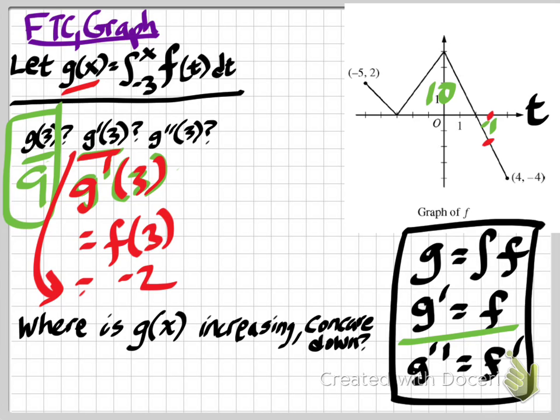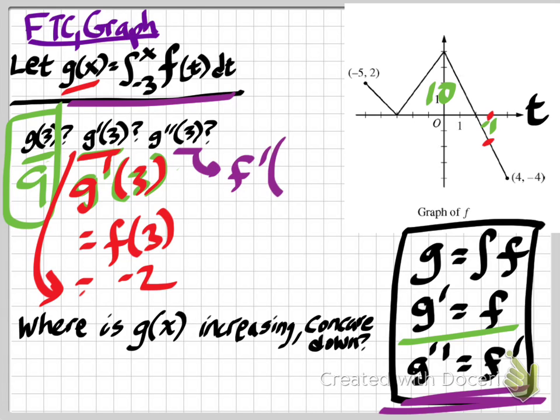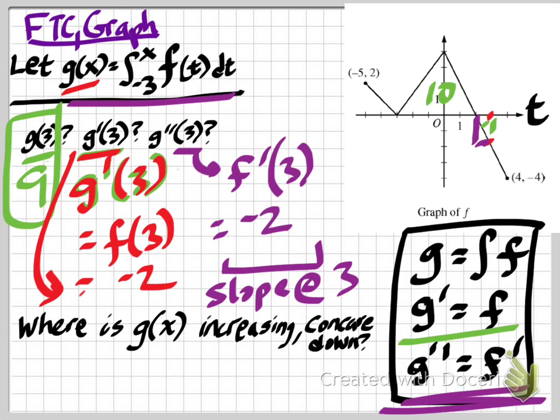g''(3) is our next question here. g''(3), well, once again, if g is the integral of f and g' is f, then as we saw for our sort of chart down here, g'' is just f'. So, this is another way of asking the question, what is f'(3)? Now, we don't have a graph of f', but a derivative, which is what this prime here is telling us, the derivative is the slope of a function, right? The slope of the tangent line. And so, this is basically asking, what is the slope at 3? Slope at 3 of the only graph we have, which is of f. So, looks like at 3, I have a slope of, because this is a line segment, down 2 and over 1, rise and run, so negative 2.